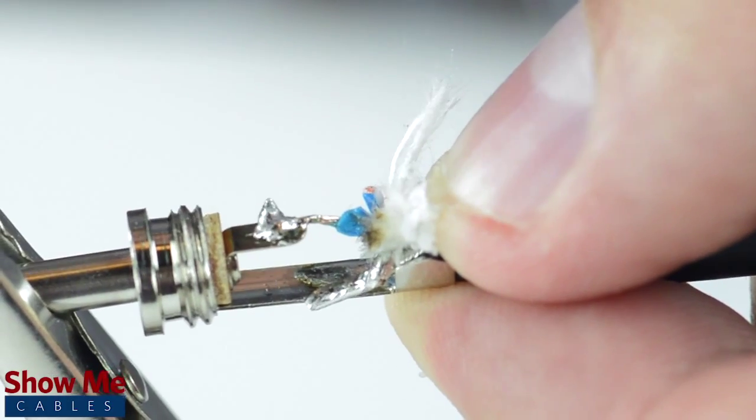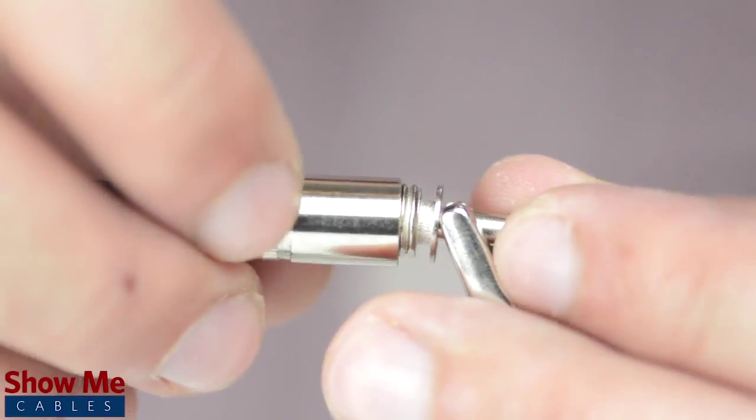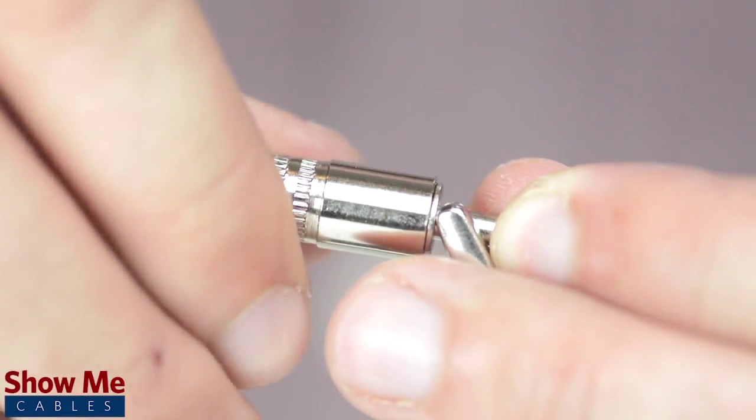Solder the tinned shield to the sleeve and the center conductor to the tip. Using pliers, pinch the strain relief onto the outside jacket. Slide up the strain relief and tighten onto the connector.